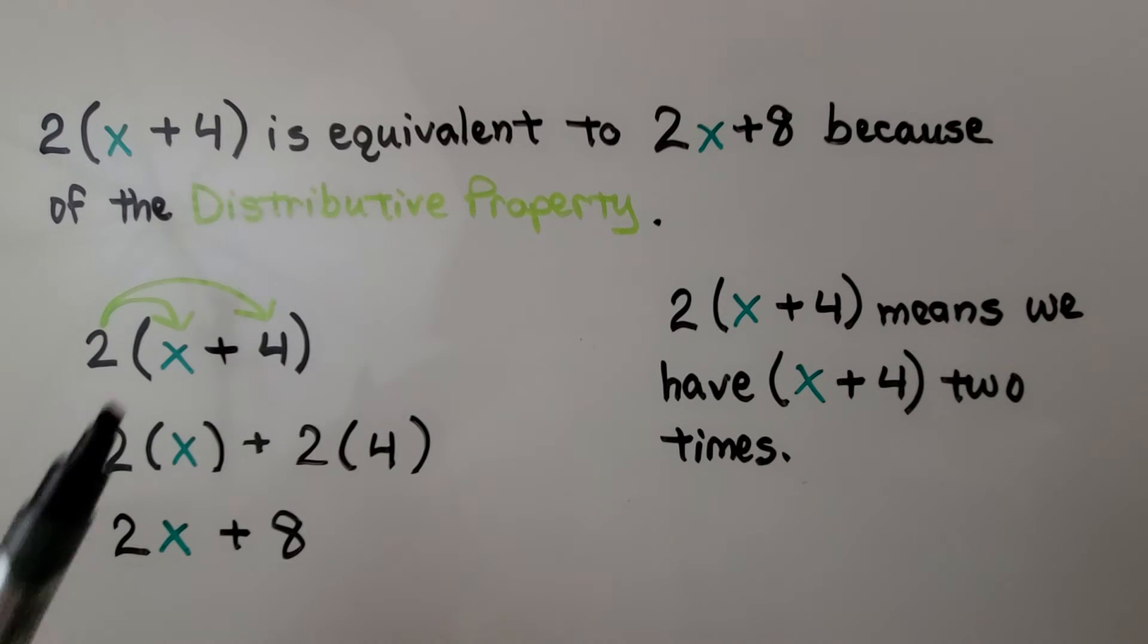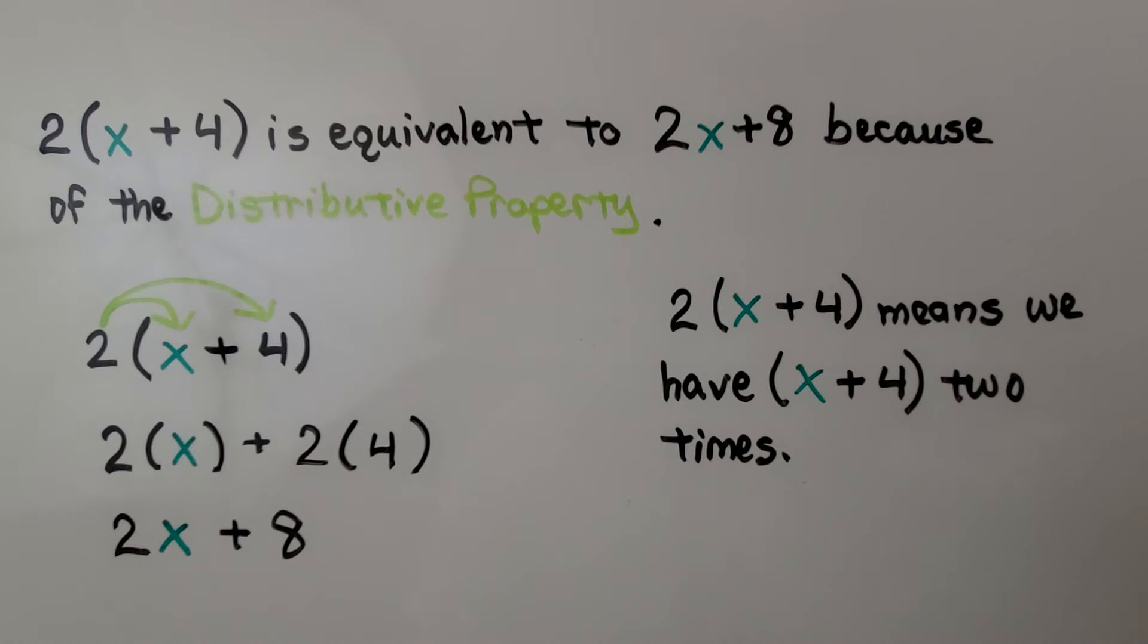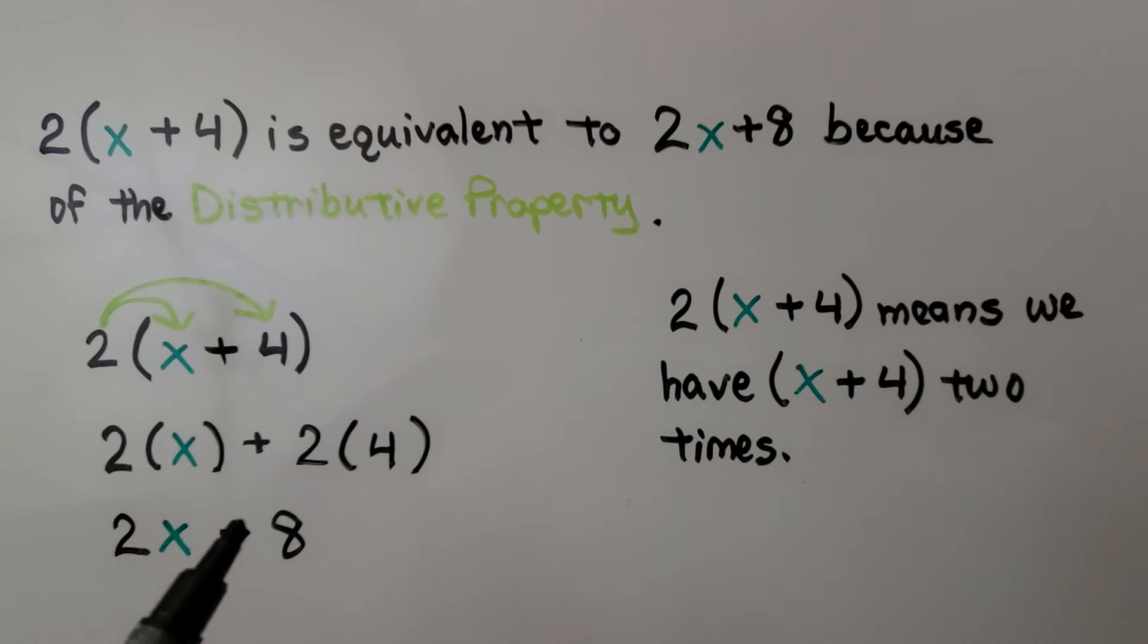2(x + 4) is equivalent to 2x + 8 because of the distributive property. We distribute the two to the x. That's two times x. We distribute it to the four. Two times four. We have 2x + 8.